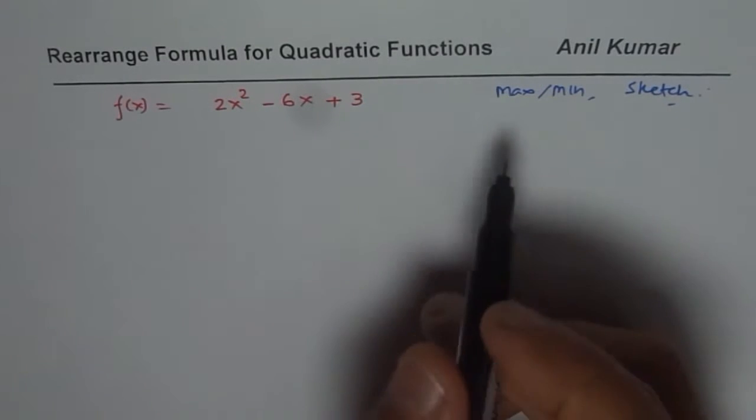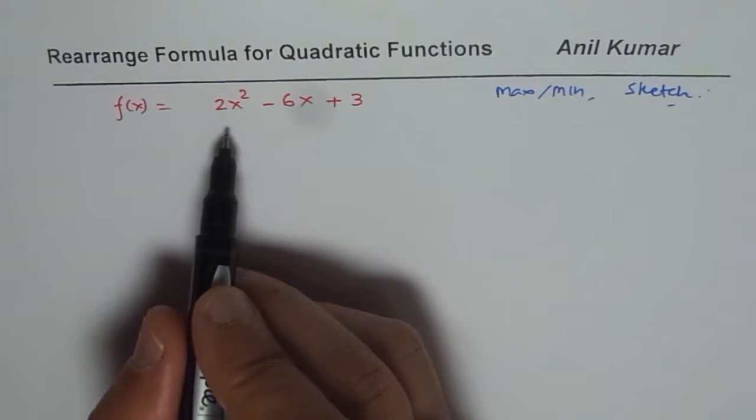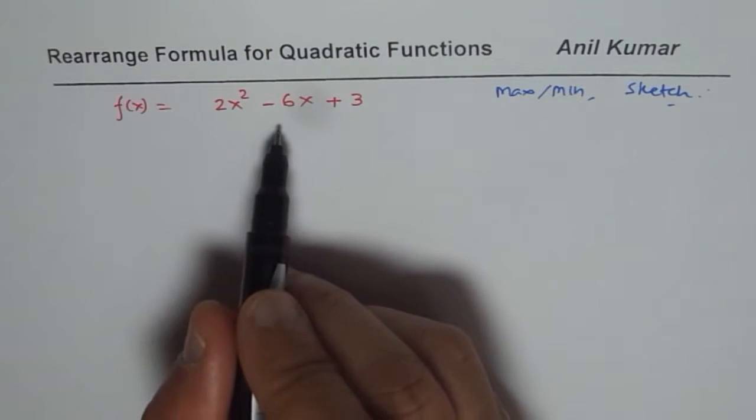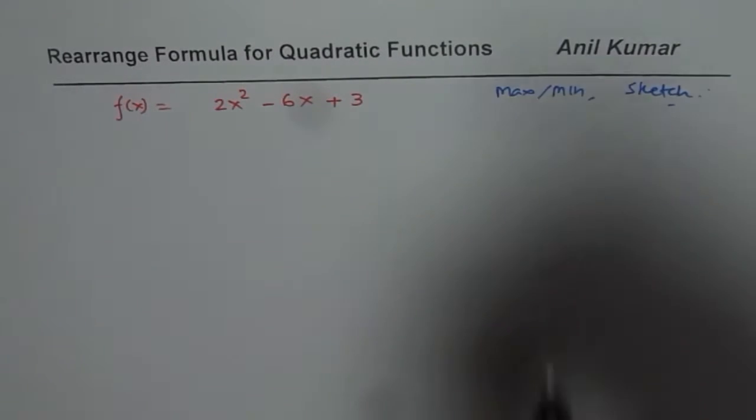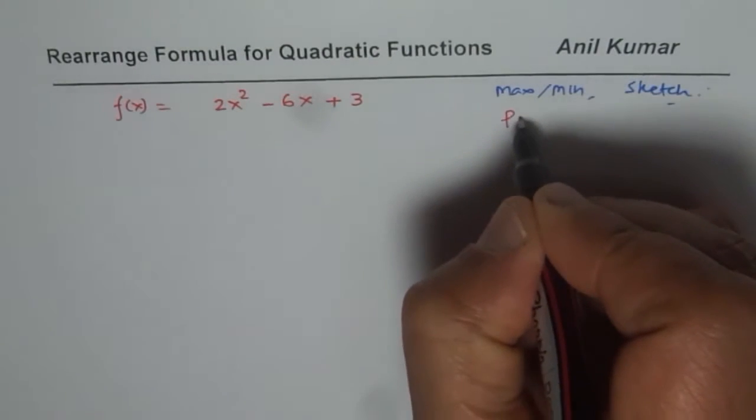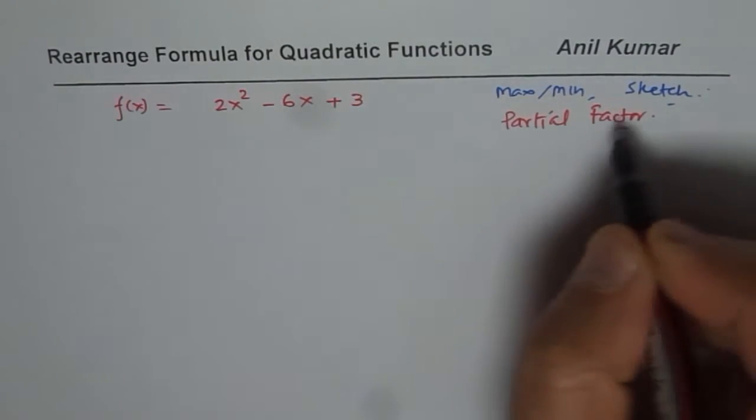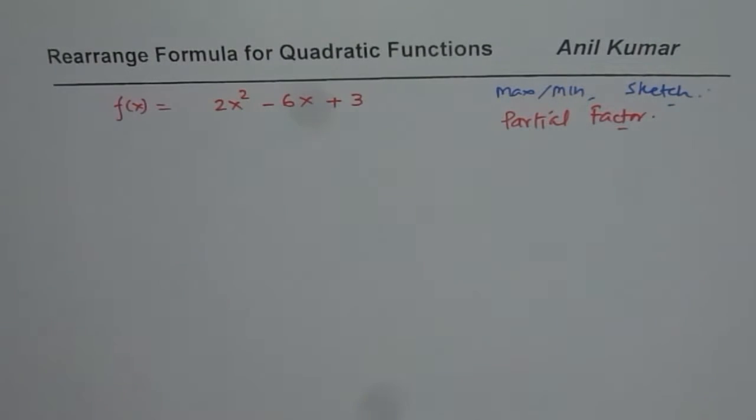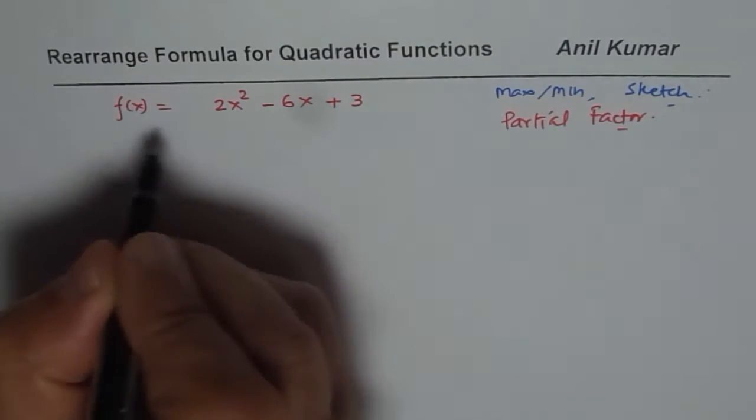To find maximum or minimum, we have to complete the squares. So the method being applied here will be completing the squares. There are, however, other methods also. Method of partial factoring is, in fact, more effective. So we will also apply partial factoring. You will appreciate how easy and effective it is. But let us start with completing the squares, which is a very standard way of doing it.